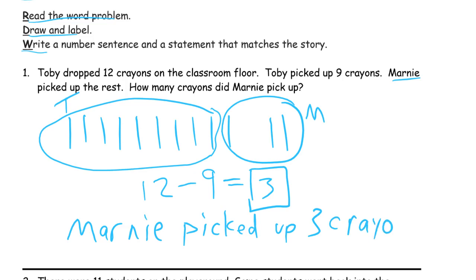Well, we started out with 12. We subtracted the 9 that Toby picked up. And we had Marnie's 3 left over. Marnie picked up 3 crayons.